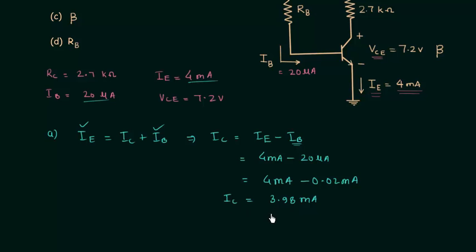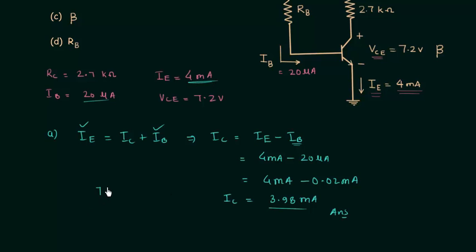When you solve this you get 3.98 milliamps as the value of collector current, which is the answer to Part A. Notice that the collector current is nearly equal to the emitter current — 3.98 milliamps versus 4 milliamps.